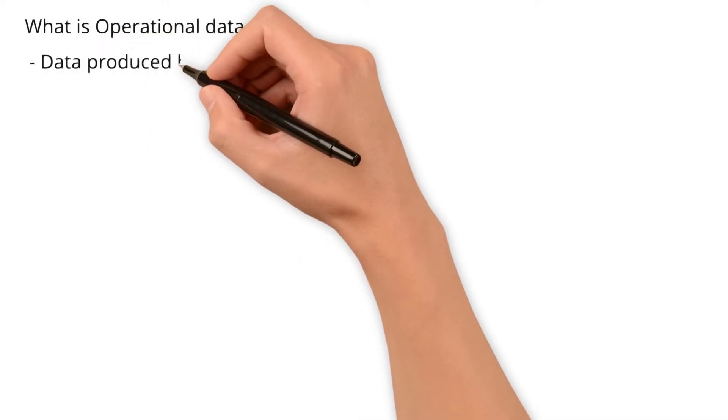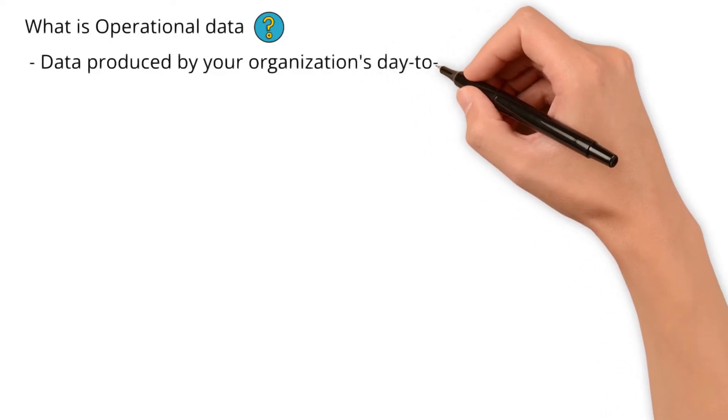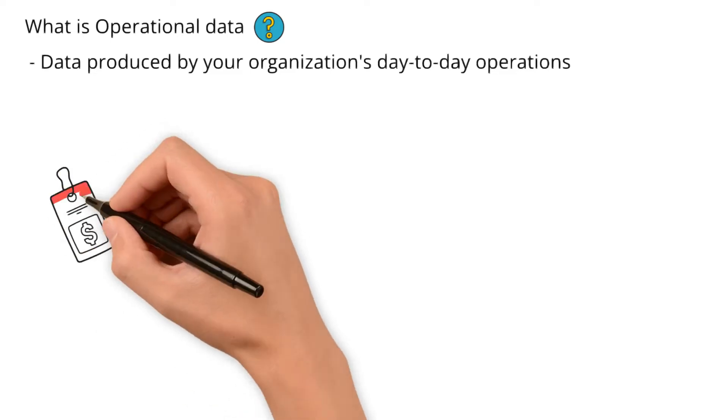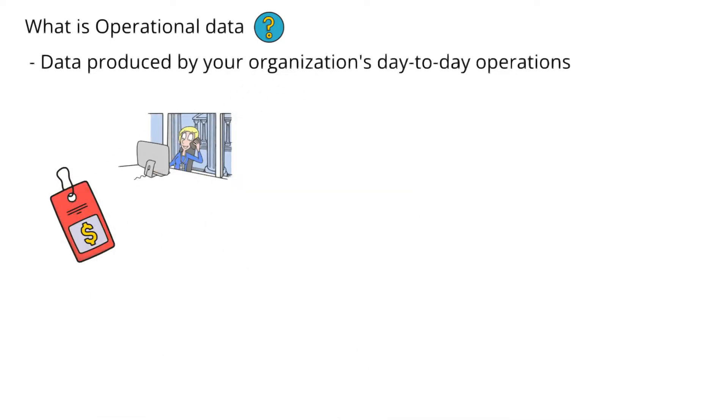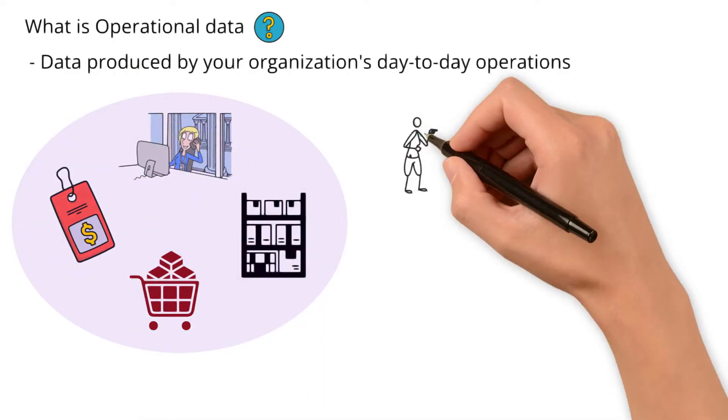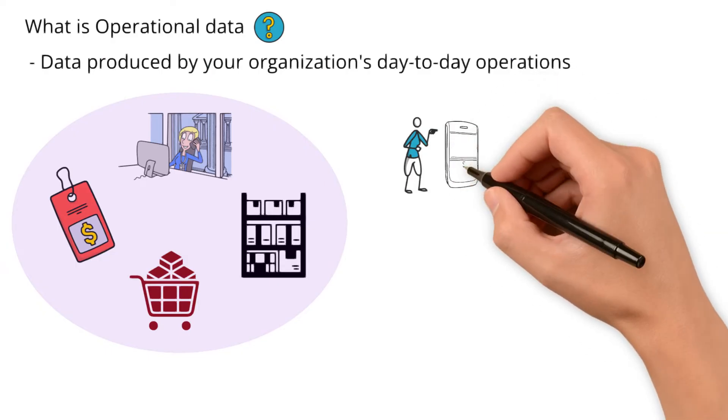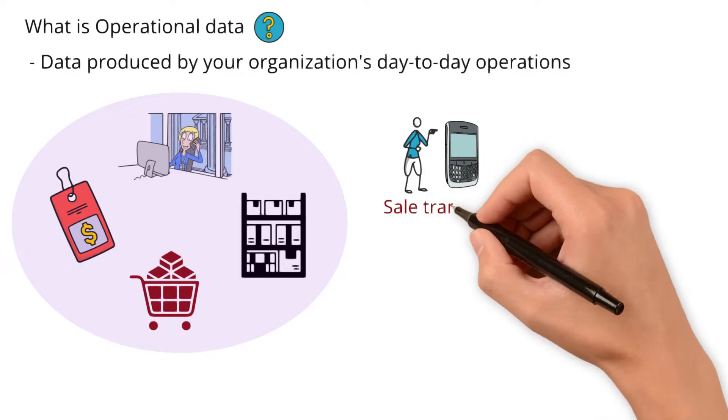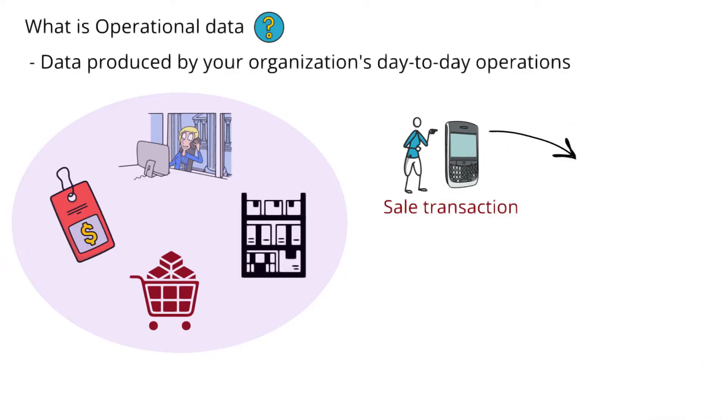To begin with, what is operational data? As it sounds, it is the data that is produced by your organization's day-to-day operations. It captures transactions like daily sales, customer interactions, inventory movements, and procurements. Think about when you bought a mobile phone. That transaction you made is like a record for the phone company showing their sale transaction. This kind of information is what we call operational data.